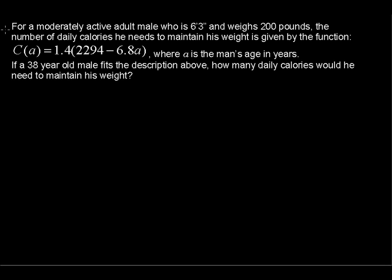For a moderately active adult male who is 6 foot 3 inches and weighs 200 pounds, the number of daily calories he needs to maintain his weight is given by the function C of A equals 1.4 times the quantity 2,294 minus 6.8 times A, where A is the man's age in years.